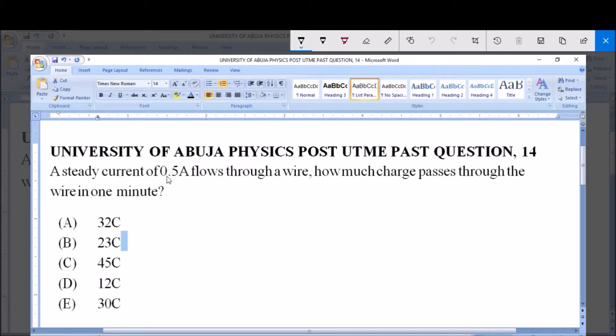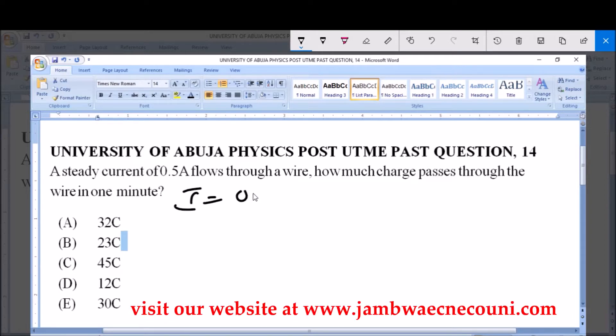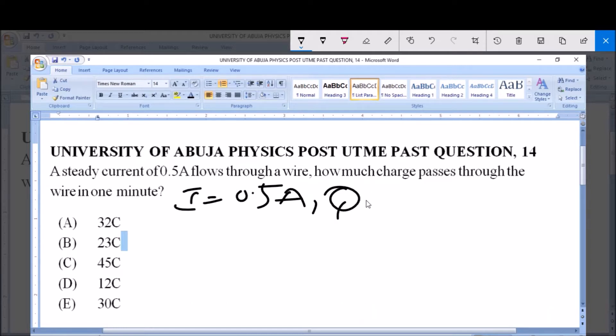Now it says a steady current, I = 0.5 amperes, flows through a wire. How much charge? Charge, quantity of charge is Q. This is the unknown in this particular question. It passes through the wire in one minute.